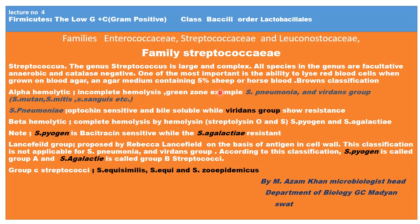Alpha hemolytic bacteria perform incomplete hemolysis. When they do incomplete hemolysis, green zones appear on the blood agar. Examples of alpha hemolytic bacteria are Streptococcus pneumoniae and the Viridans group — including Streptococcus mutans and Streptococcus mitis. They all perform incomplete hemolysis on blood agar.